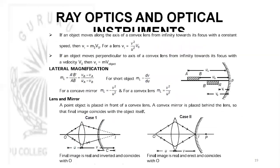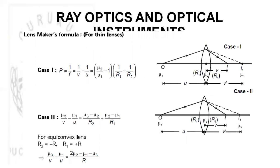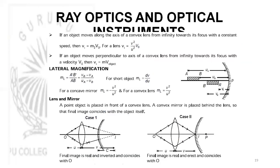Lateral magnification is the magnification when the object is kept with its length along the principal axis. It is given by A'B' / AB = (VB minus VA) / (UA minus UB). For a short object, lateral magnification ML equals dv/du. In the combination of a lens and a mirror, a point object is placed in front of a convex lens and the convex mirror is placed behind the lens; the final image coincides with the object itself when the required condition is satisfied.